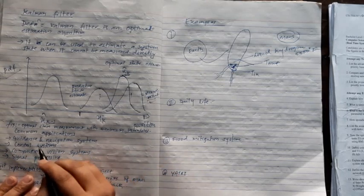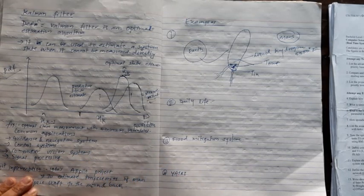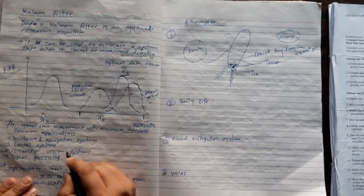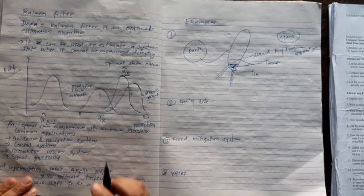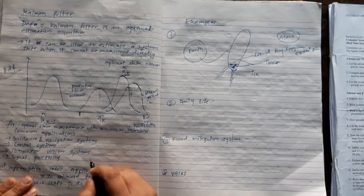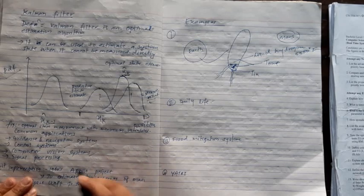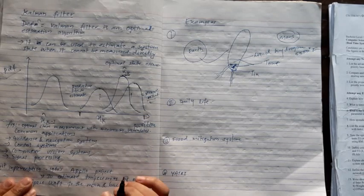The Kalman filter is used in guidance and navigation systems, control systems, guidance and control systems, computer vision systems, and also in signal processing.